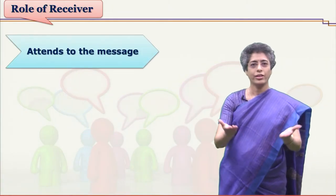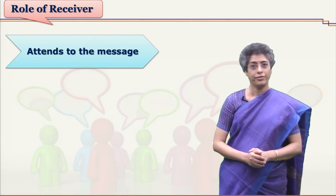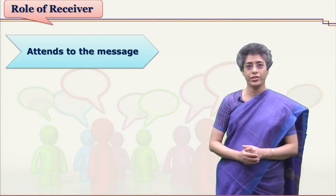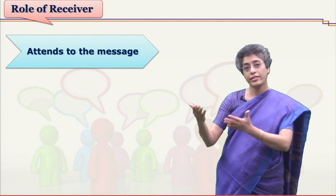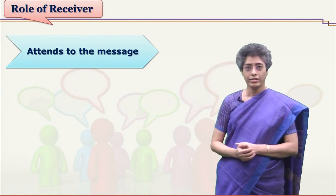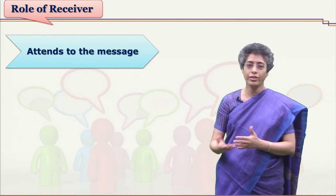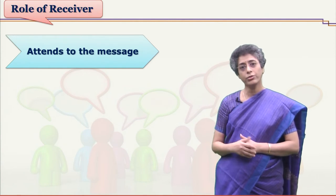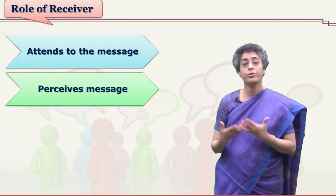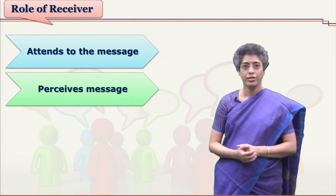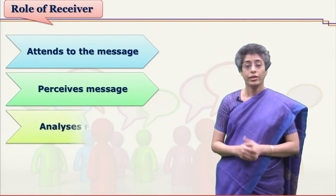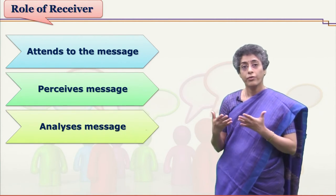Let's see what a receiver does. First, the receiver has to attend to the message. Whenever a sender sends a message and the receiver understands that a message is reaching them, the receiver first attends to the message. After attending, the receiver perceives the message — it's not only about attending, but you need to perceive the message in its correct form.